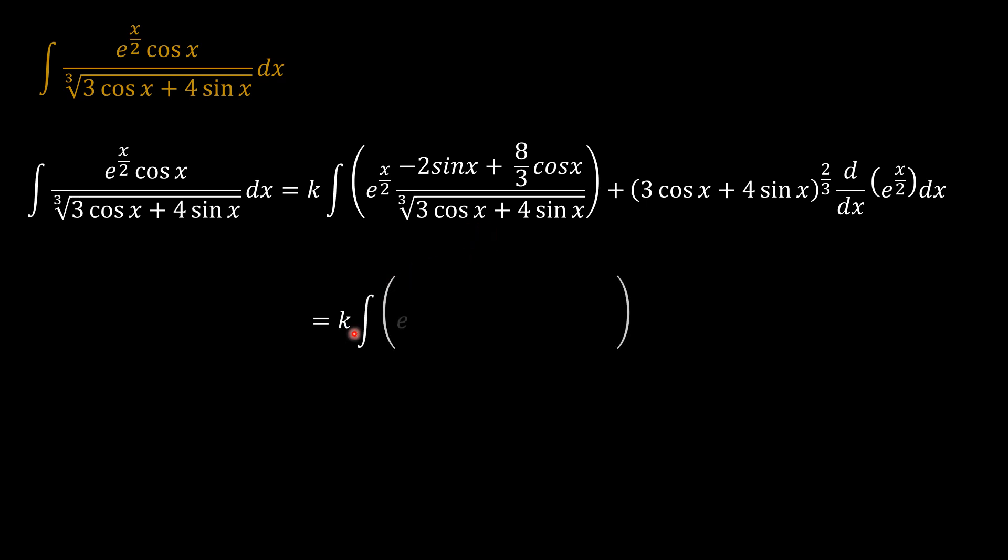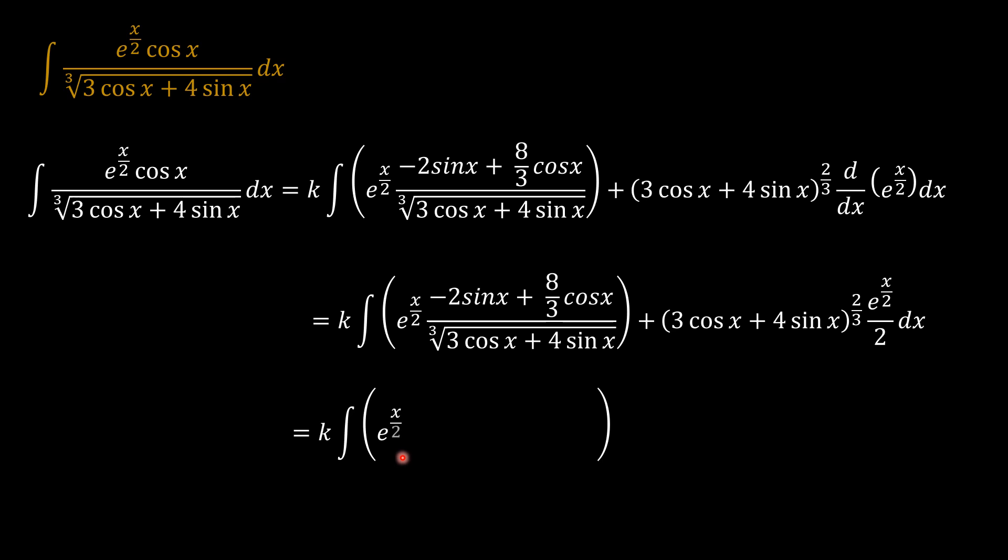So when I keep this constant here and have this derivative here, plus this times the derivative of x over 2, which is e to the power x over 2 times the derivative of this.